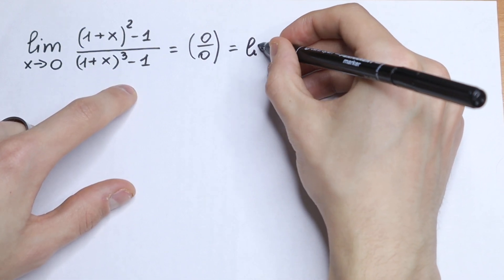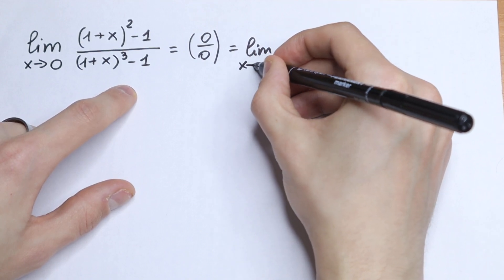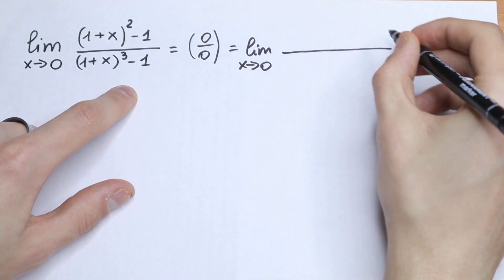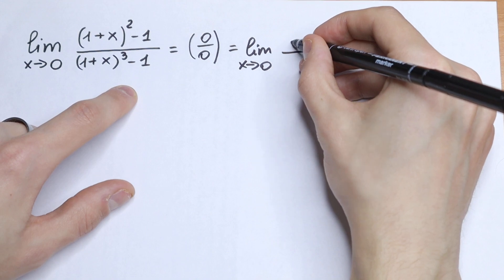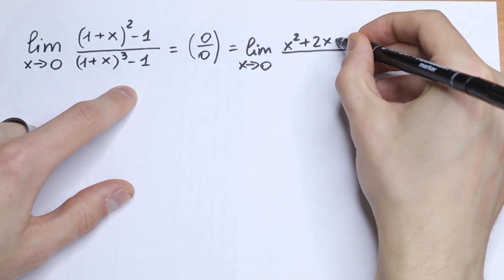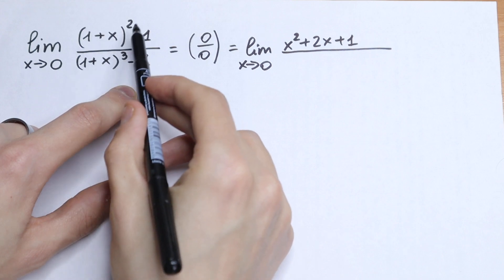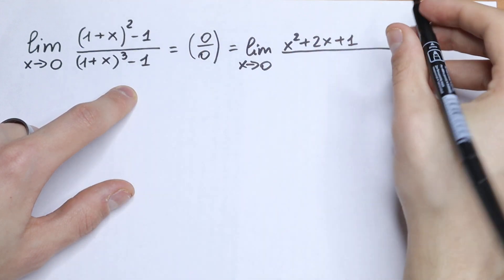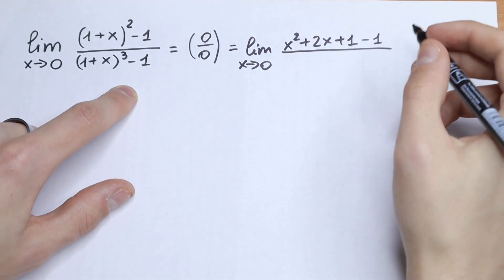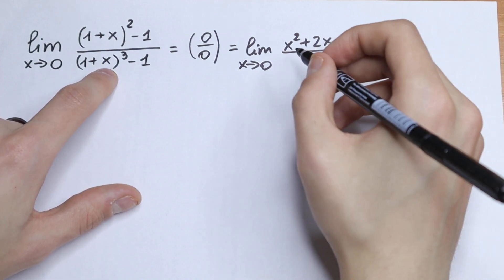So we'll have the limit as x approaches 0 of the function. We will have x² + 2x + 1. This is our parentheses to the second power, and minus 1.